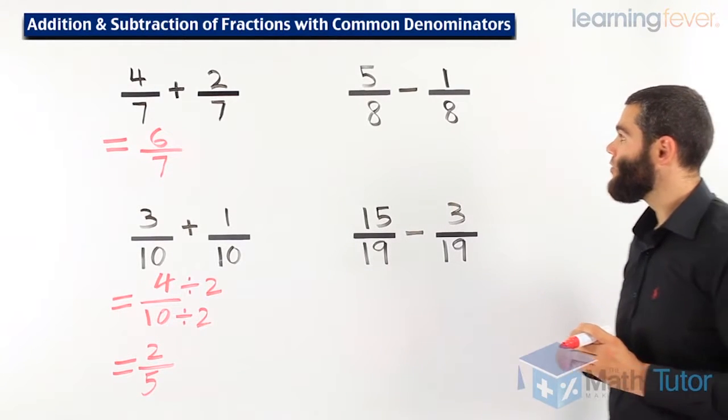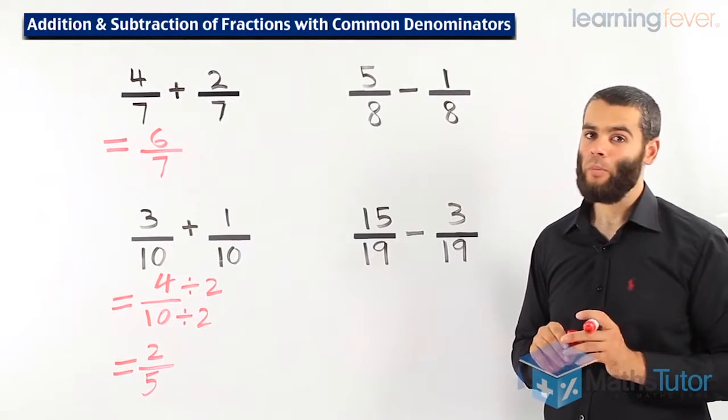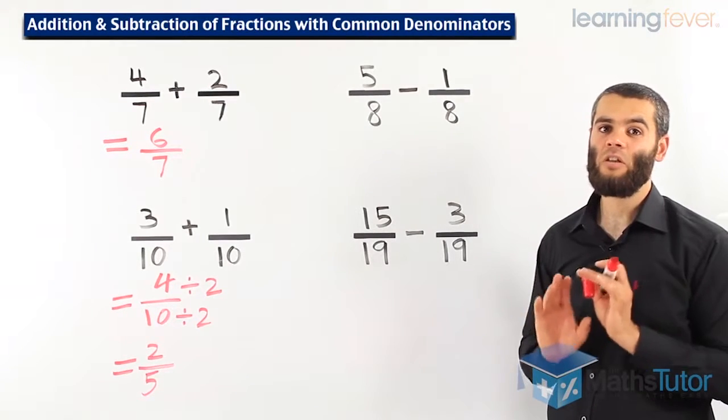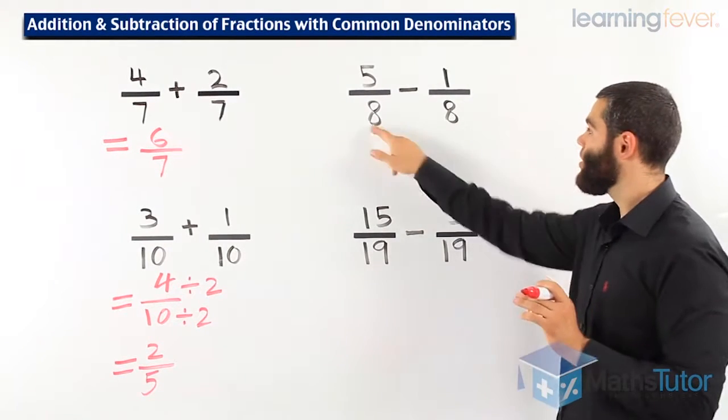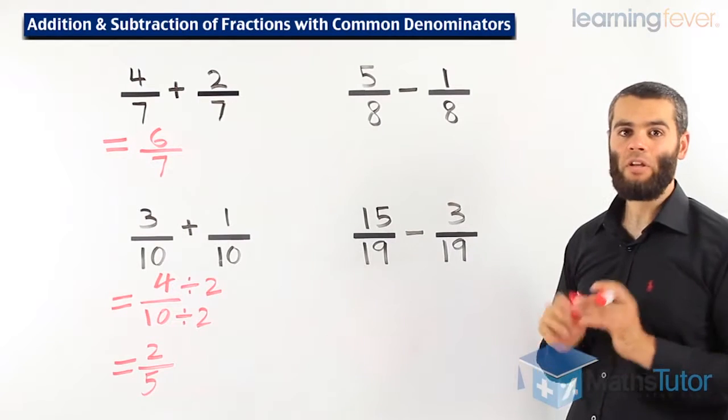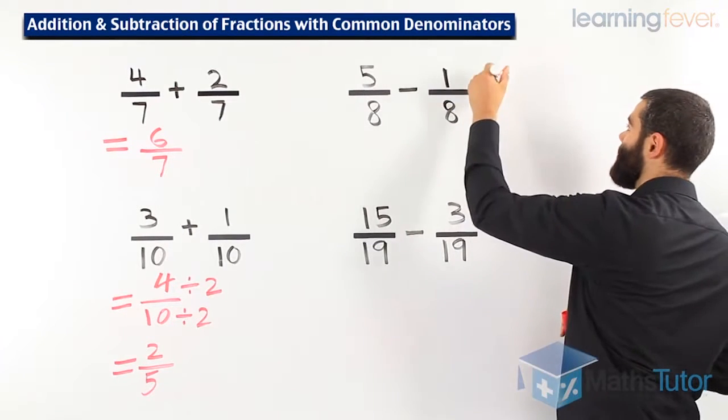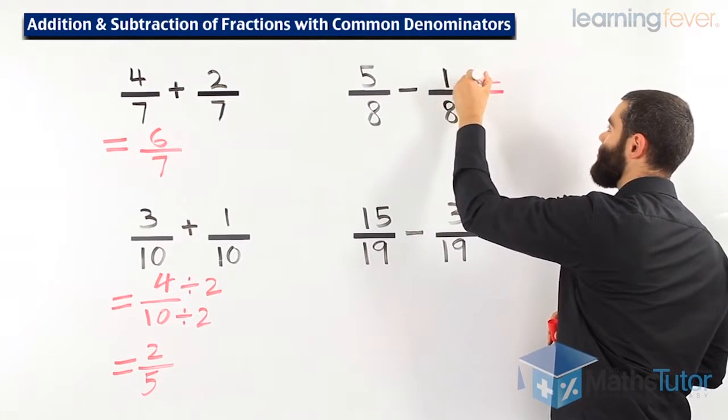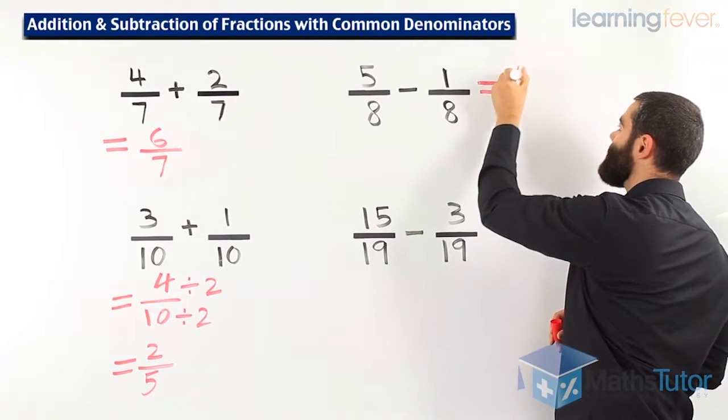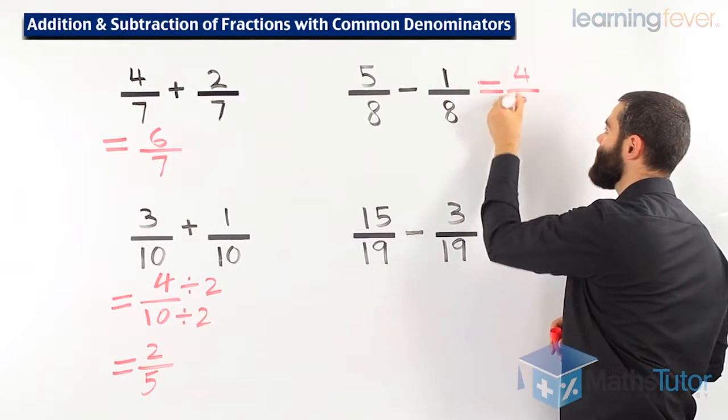This example, 5 over 8 take away 1 over 8. We mentioned that addition and subtraction follow the same rule. We look for common denominators. Yes, they're common. We can now subtract. 5 take away 1 is 4 over 8.